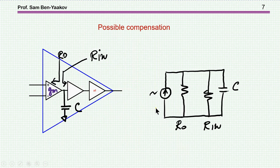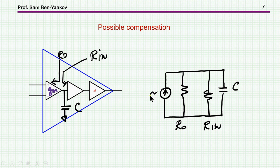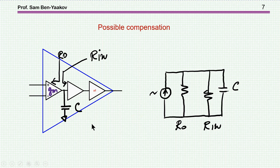Unfortunately this capacitor causes problems. Now there are two ways to place a capacitor. You could put it here to ground — there is a GM amplifier with high output impedance and some input resistance to the intermediate amplifier. However, the value of capacitance needed is very large — large enough that the area required on the chip die would be large and very costly.